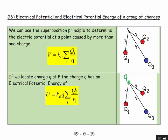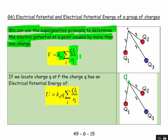We can use the superposition principle to determine the electric potential at a point caused by more than one charge. Basically, we say V equals ke, because that's common to all of them, multiplied by the sum of each charge divided by each charge's distance from the point of interest.